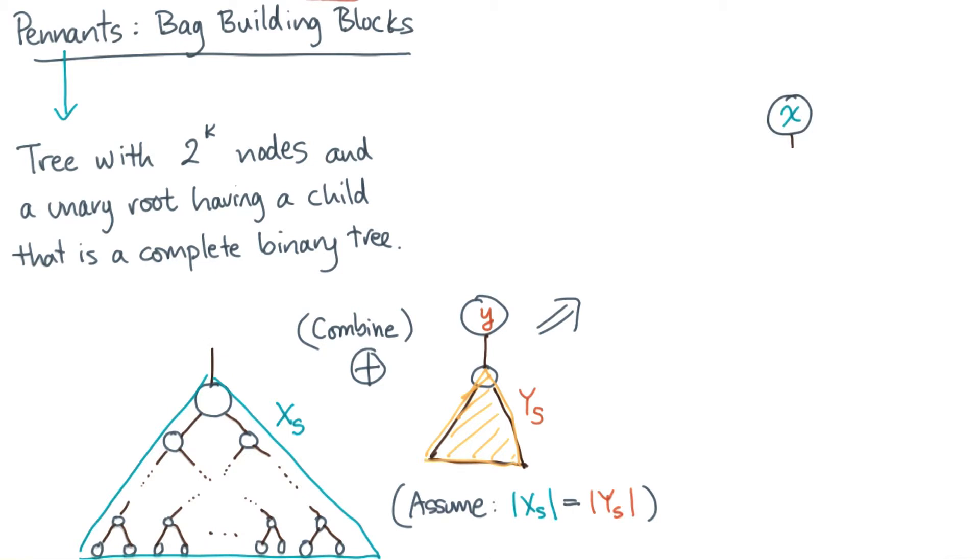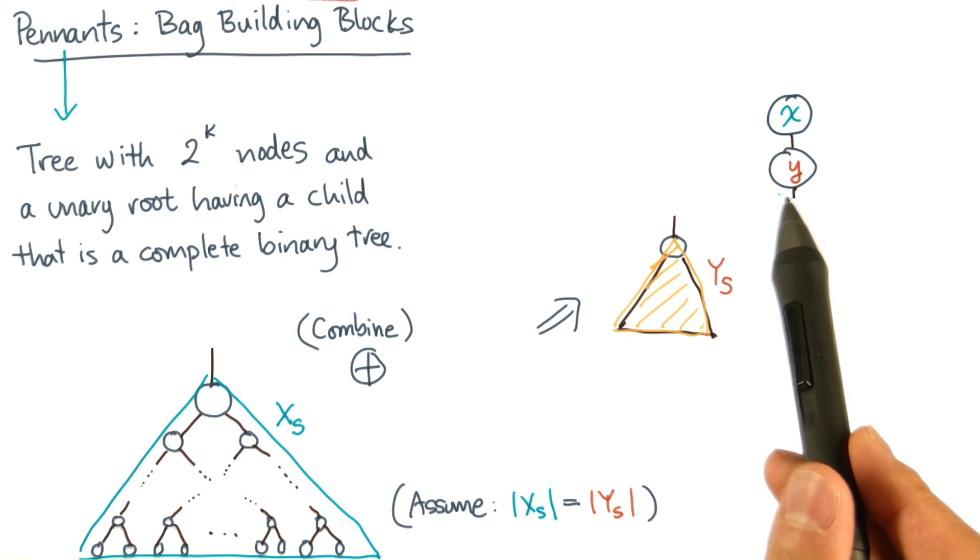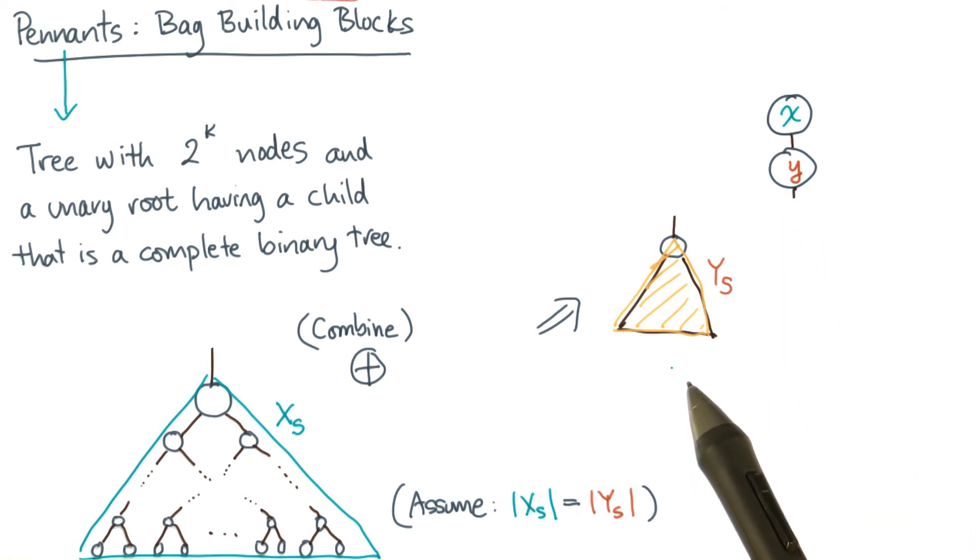Let's take the other root and make it the new only child of x, so that x is unary. Now, since we have two complete subtrees left, and the subtrees are both exactly of the same size, I can make them both children of y. And together, they'll still be a complete binary subtree.